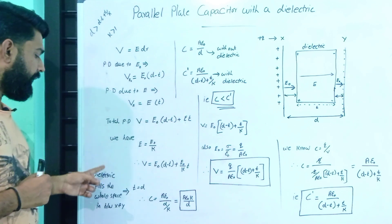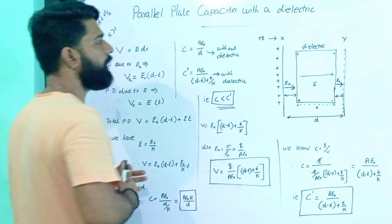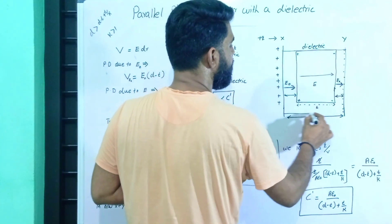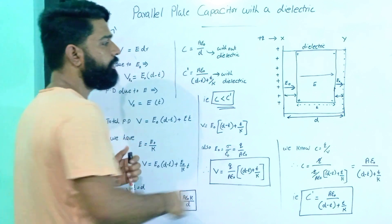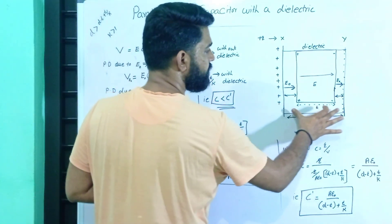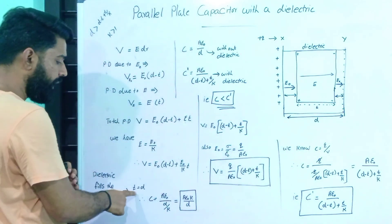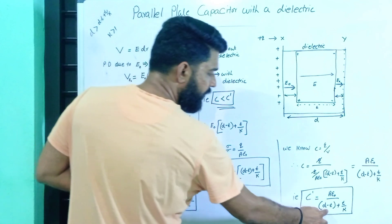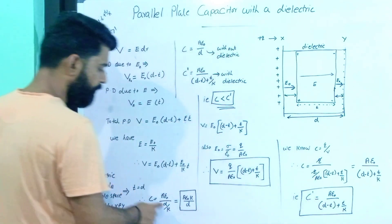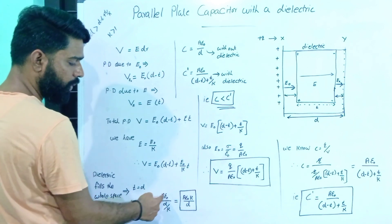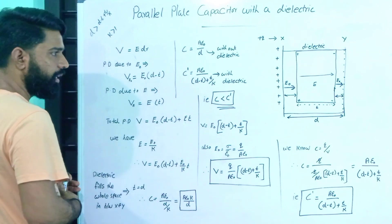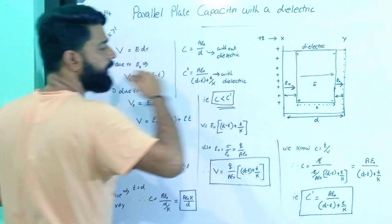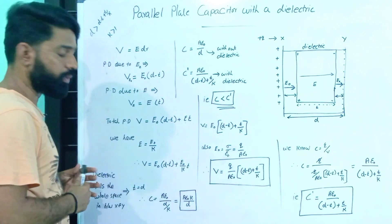Suppose the dielectric fills the whole space between X and Y, meaning t is equal to d. Substituting this condition: d minus d equals 0, so the expression becomes 0 plus d by K, which is d by K. Therefore C prime equals Aε₀ divided by (d by K), which simplifies to KAε₀ divided by d. This is the capacitance when the dielectric completely fills the space between the plates.